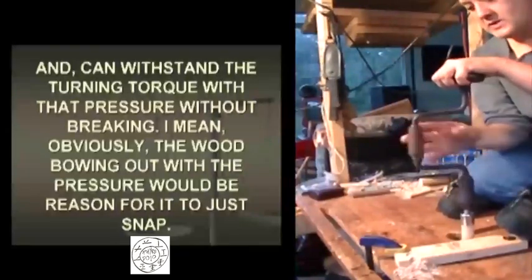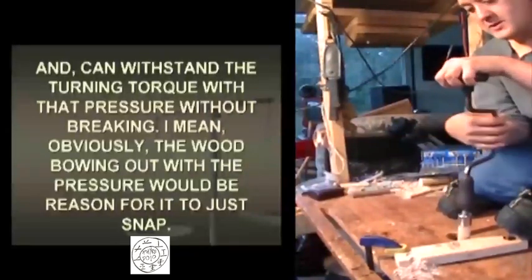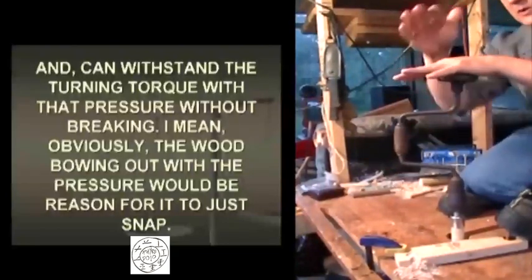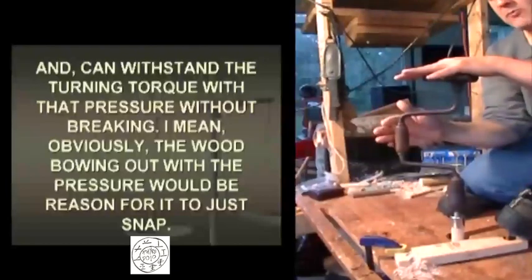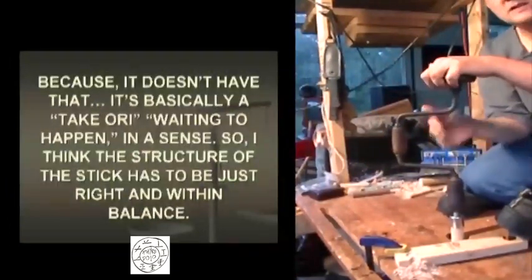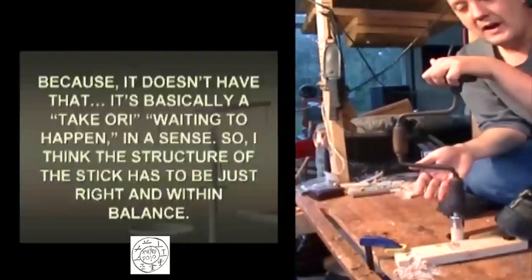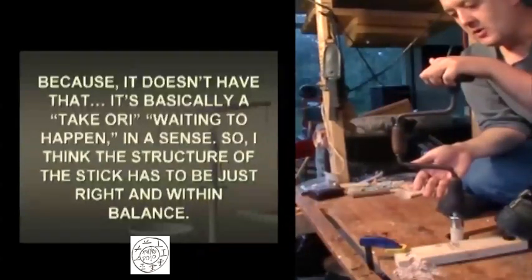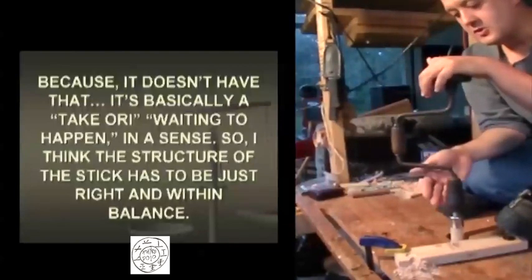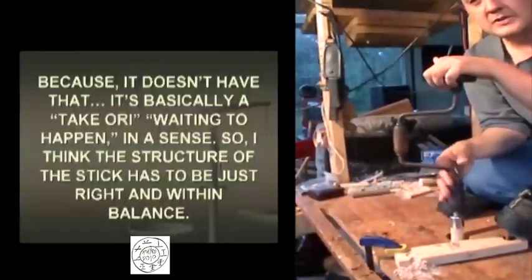And can withstand the turning torque with that pressure without breaking. I mean, obviously the wood bowing out with the pressure would be reason for it to just snap, because it doesn't have that. It's basically a torsion failure waiting to happen in a sense. So I think that the structure of the stick has to be just right and within balance.